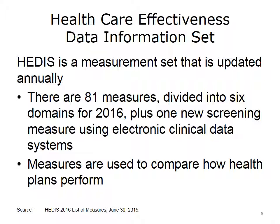HEDIS is a set of standardized quality measurements designed to show how well health plans perform on common standards. The steward of HEDIS is a private nonprofit organization, the National Committee on Quality Assurance, or NCQA, founded in 1990. In addition to HEDIS, NCQA engages in other quality and accreditation programs, such as certifying patient-centered medical homes. Currently, HEDIS measures are used by over 90% of U.S. health care plans. For 2016, HEDIS contains 81 quality measures which fall into six domains: effectiveness of care, access and/or availability of care, experience of care, utilization and risk-adjusted utilization, relative resource use, and health plan descriptive information. In 2016, there is also a first-year measure to track the utilization of the PHQ-9, a screening tool to monitor depression symptoms as reported by patients, collected using electronic clinical data systems.